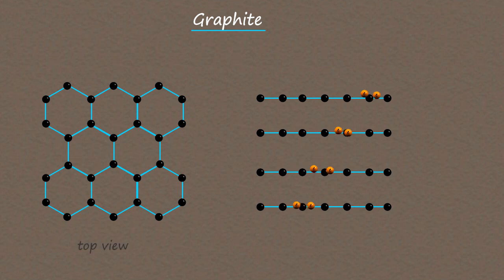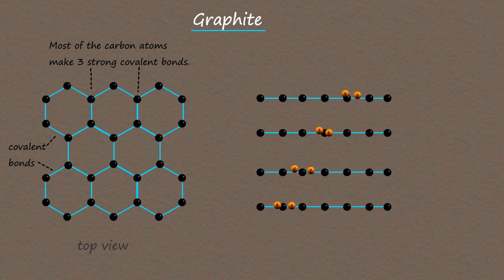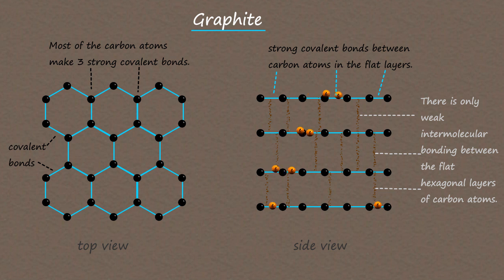In the top view of the graphite structure, you can see that most of the carbon atoms make three covalent bonds. These covalent bonds are very strong and require a large amount of energy to break them. However, in the side view, there is only weak intermolecular bonding between the flat layers of carbon atoms, which means that these weak bonds will be easy to break.